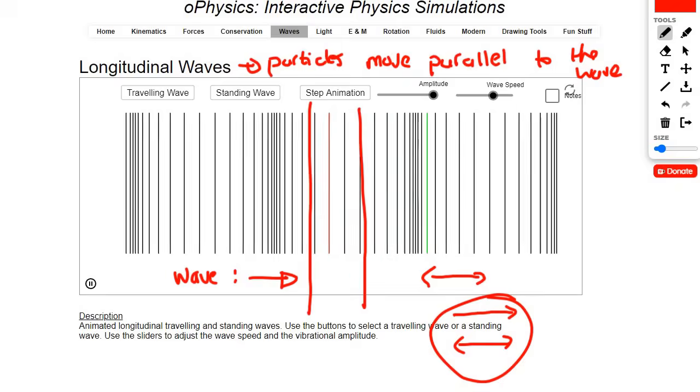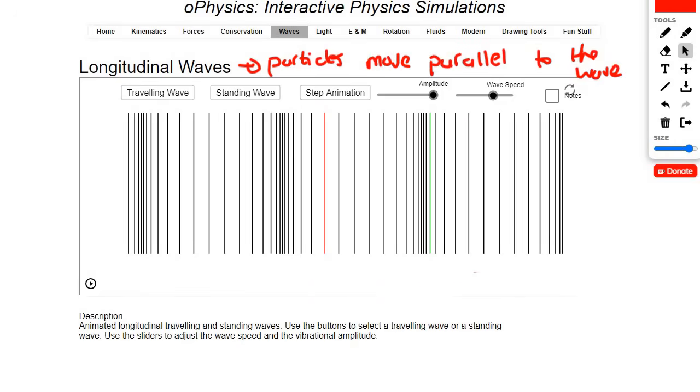All right, so let's talk about a few things. This area here and here and there and there, you see where all the lines are really squashed together or they're very close together? Well, that area is called a compression because all the particles are compressed together.